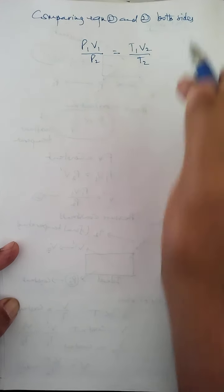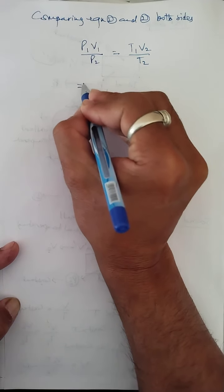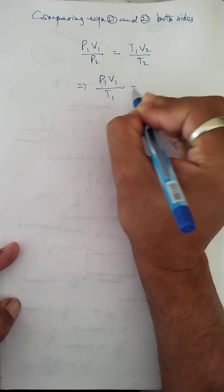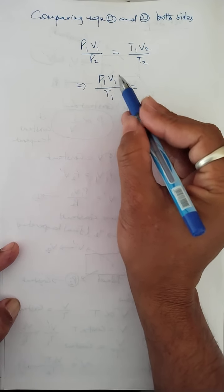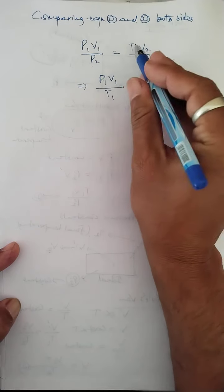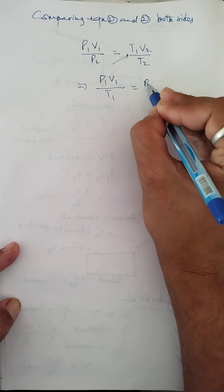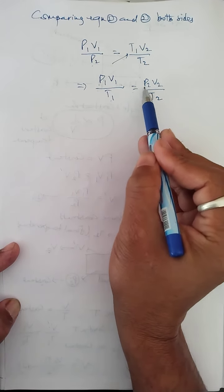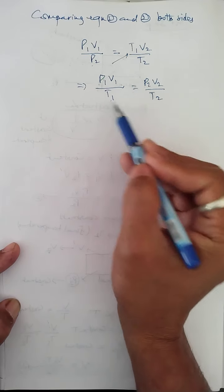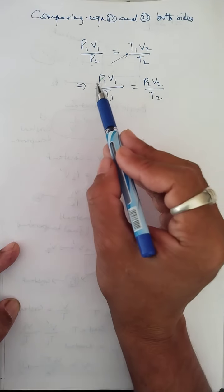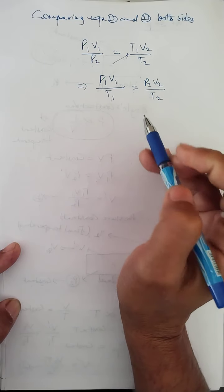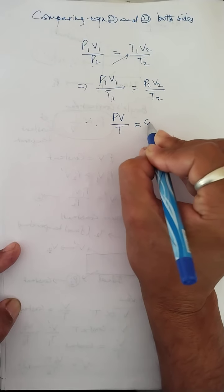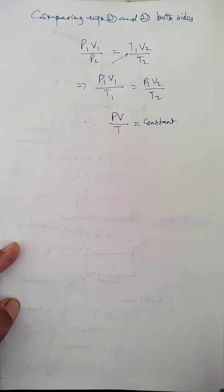Comparing equation 1 and equation 2: P1V1 / P2 = V2·T1 / T2. Rearranging — bringing T1 to the left side and P2 to the right side — we get P1V1 / T1 = P2V2 / T2. So all three parameters are related by: P1V1 / T1 = P2V2 / T2, which means PV/T = constant.